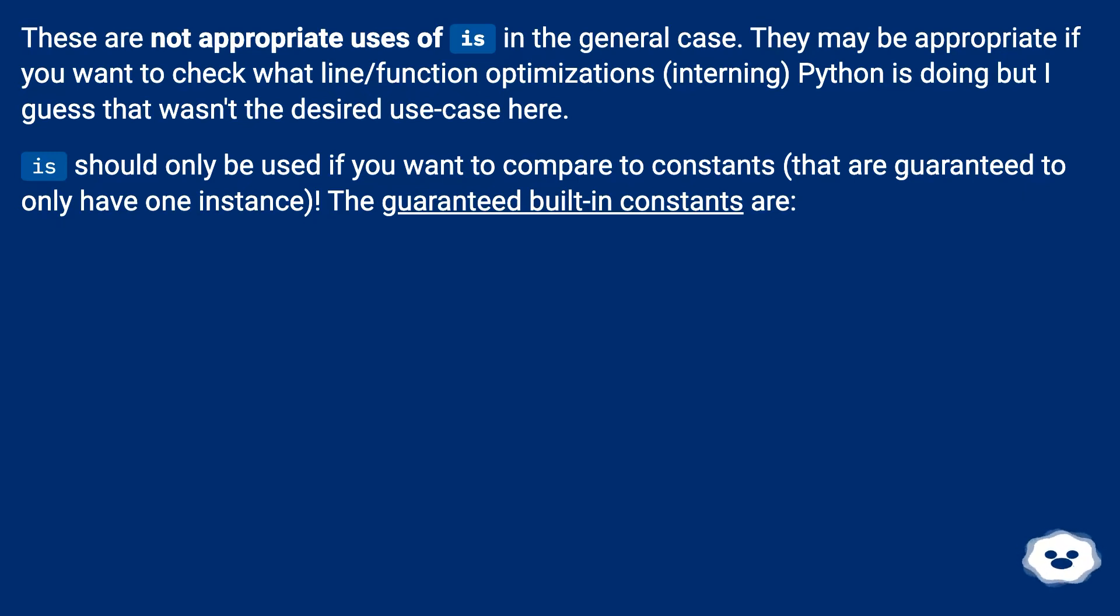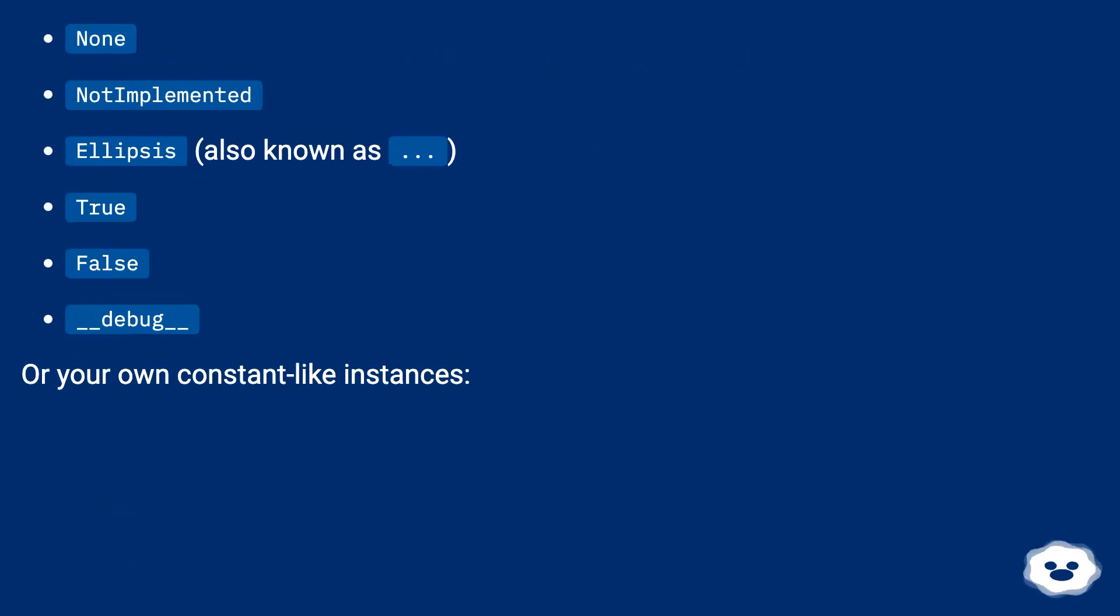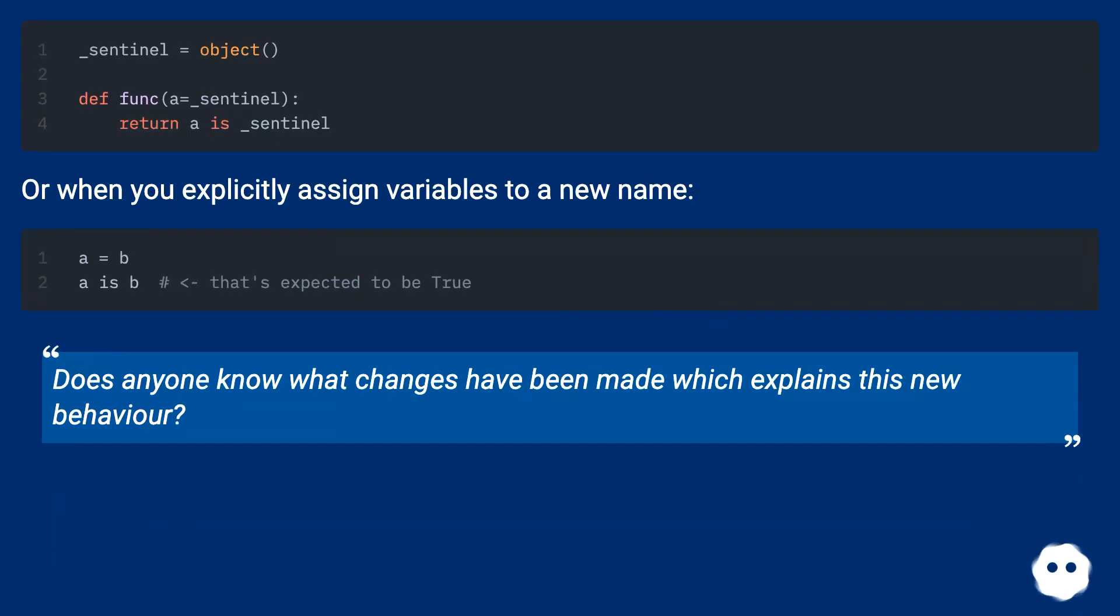It should only be used if you want to compare to constants that are guaranteed to only have one instance. The guaranteed built-in constants are: None, NotImplemented, Ellipsis (also known as dot dot dot), True, False, __debug__. Or your own constant-like instances. Or when you explicitly assign variables to a new name.